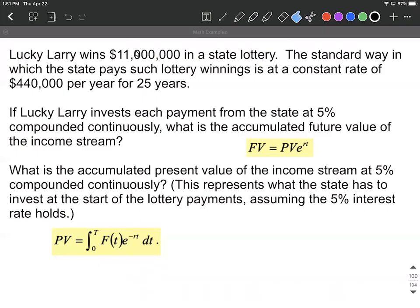This example is about winning the lottery. Lucky Larry wins $11 million, except he's not going to take the $11 million. He's going to get paid out year by year. The standard way is he's going to get $440,000 per year, so a constant income stream for 25 years. We have two questions to answer here.